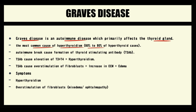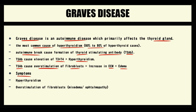In Graves' disease, initially, an immune break causes formation of thyroid-stimulating antibodies. These antibodies cause hyperstimulation of the thyroid gland, and in response, the thyroid gland begins to overproduce thyroid hormones, leading to hyperthyroidism. Additionally, thyroid-stimulating antibodies cause overstimulation of fibroblasts, resulting in increased extracellular matrix production and edema. So all symptoms of Graves' disease are related to these two pathological states: hyperthyroidism and fibroblast overstimulation causing myxedema and ophthalmopathy.